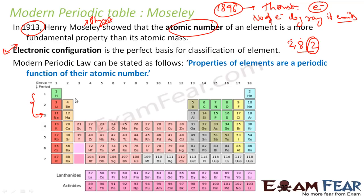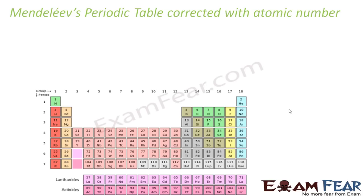The outermost electron tells you the group number. So for configuration 2,8,2, the last digit 2 means it is in group 2. If you have an element with configuration 2,3, it has two shells so it is in the second period, and 3 valence electrons means group 3. Just by electronic configuration, you can tell the location of the element in the periodic table.